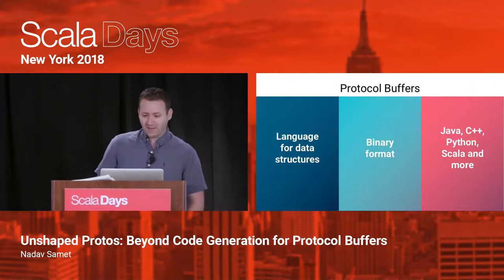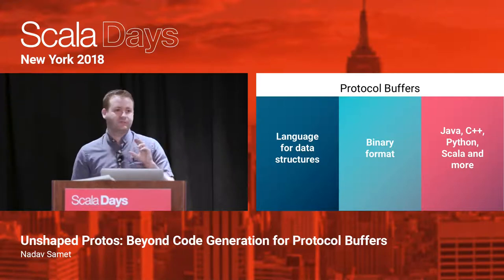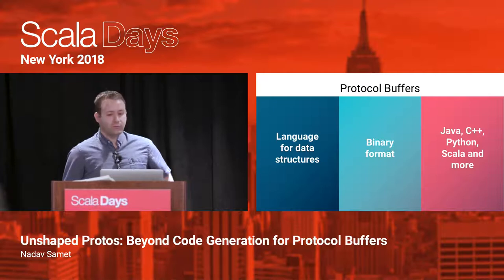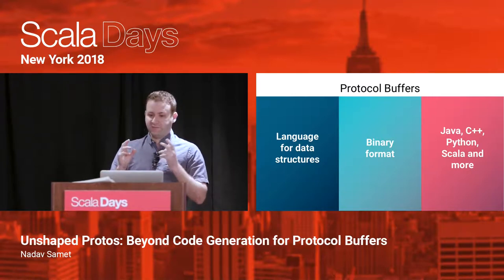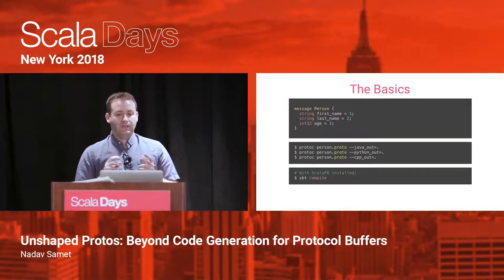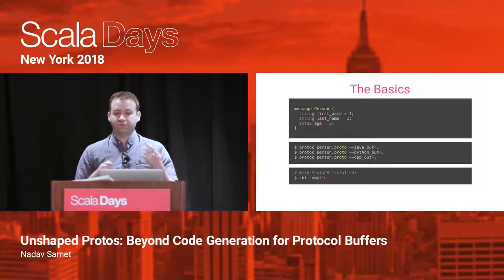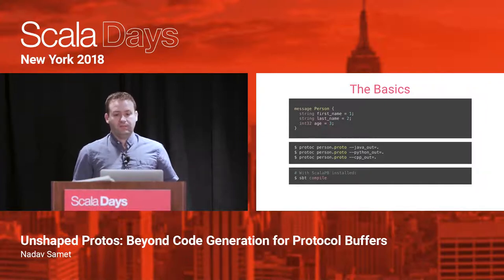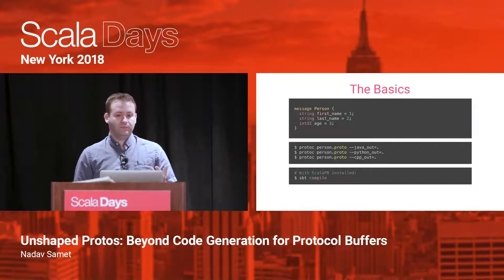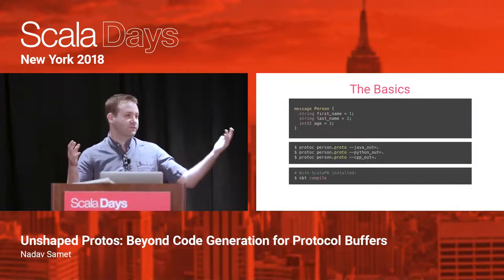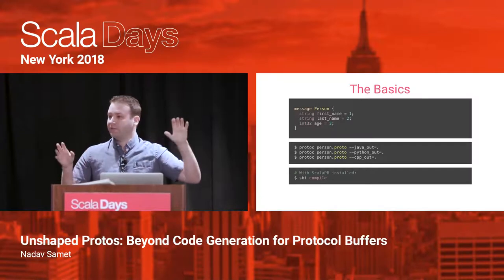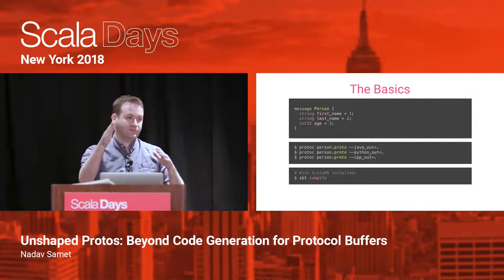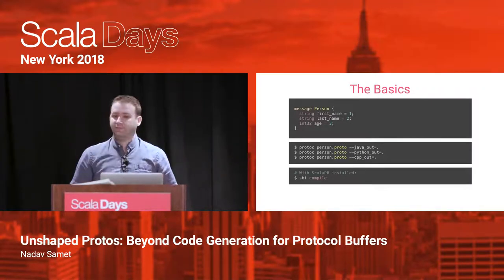Protocol buffers is a language to describe data structure — a format to define messages. It comes with a specific binary format that is well understood, well documented, and quite simple. There are code generators that already exist — the official ones for Java, C++, and Python — and my library ScalaPB adds support for Scala. The beauty of this system is that you can start with a protocol buffer and generate code in Java, C++, and Python, so different teams in your organization can use the same protocol buffer as a reference. Different languages, different platforms, different projects can exchange messages: you serialize on one side, you deserialize in a different place, and you get essentially the same data in a different language.